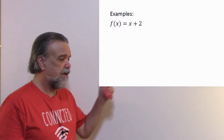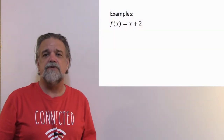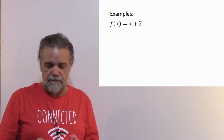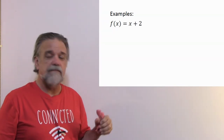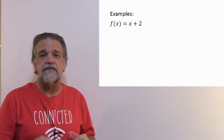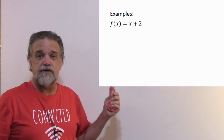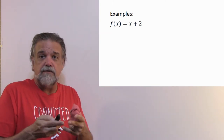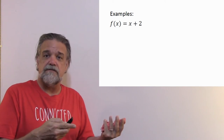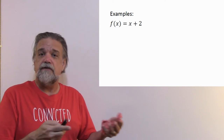Let me give you some examples. Our first example is f(x) = x + 2 — a perfectly fine example of a function. The way you read that is 'f of x,' not 'f times x.' The function f just takes a value and adds 2 to it. So if x were 4, f(x) would be 6.